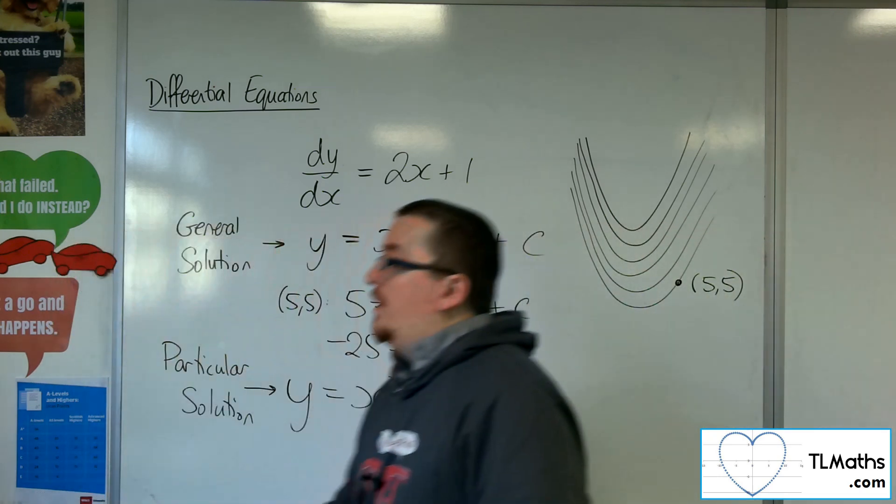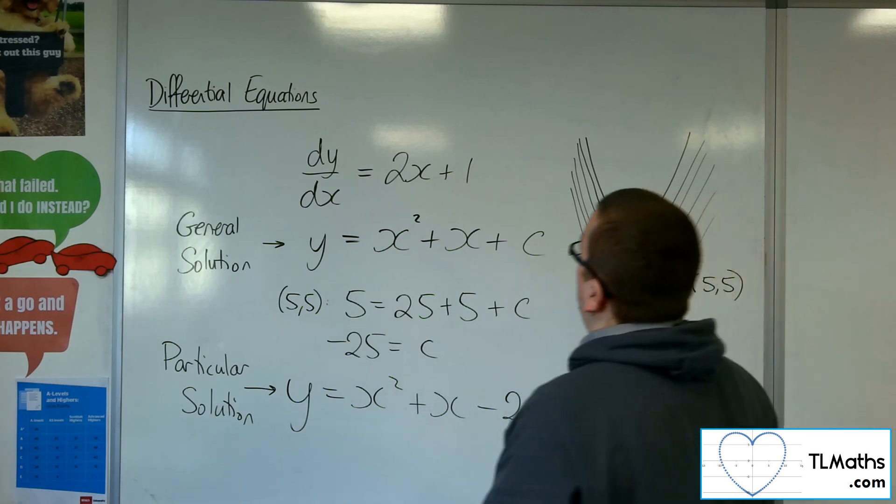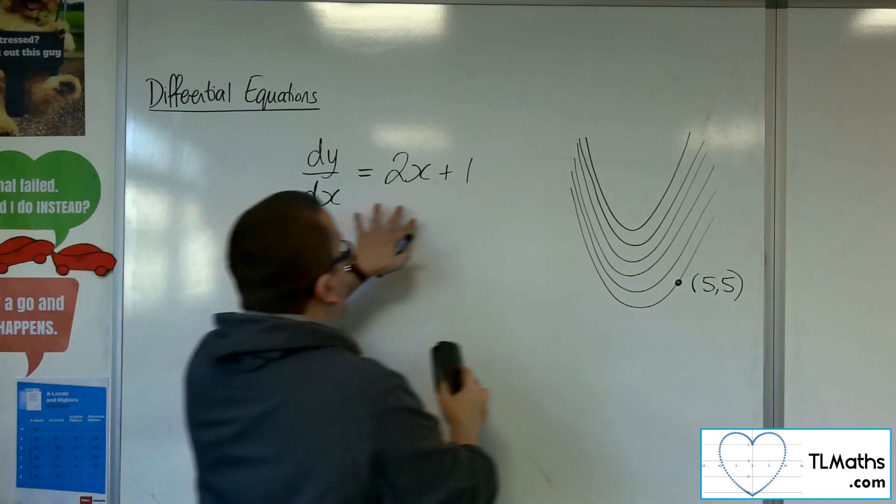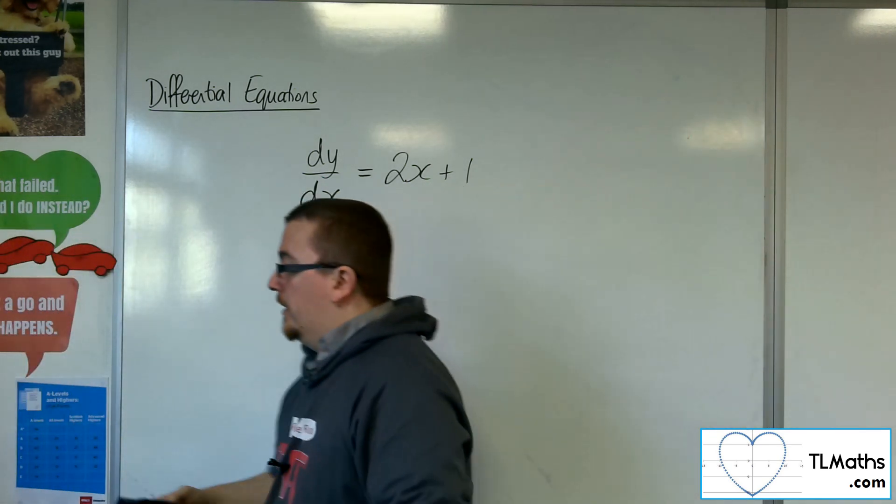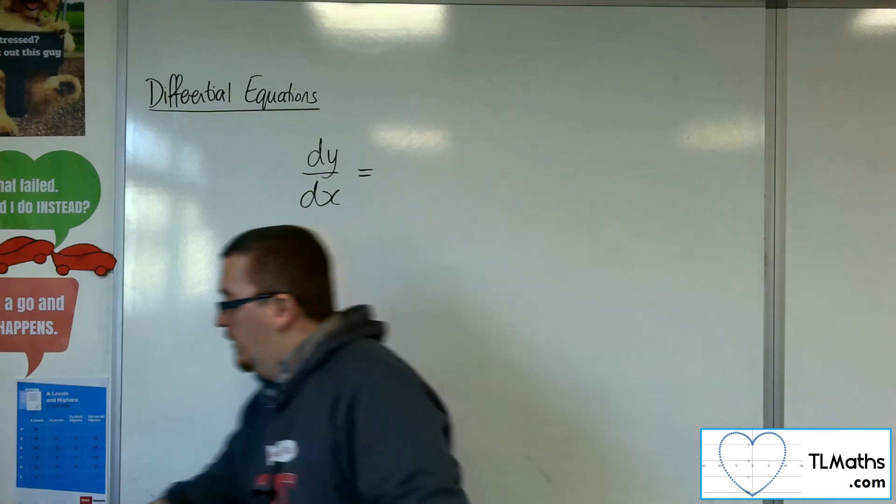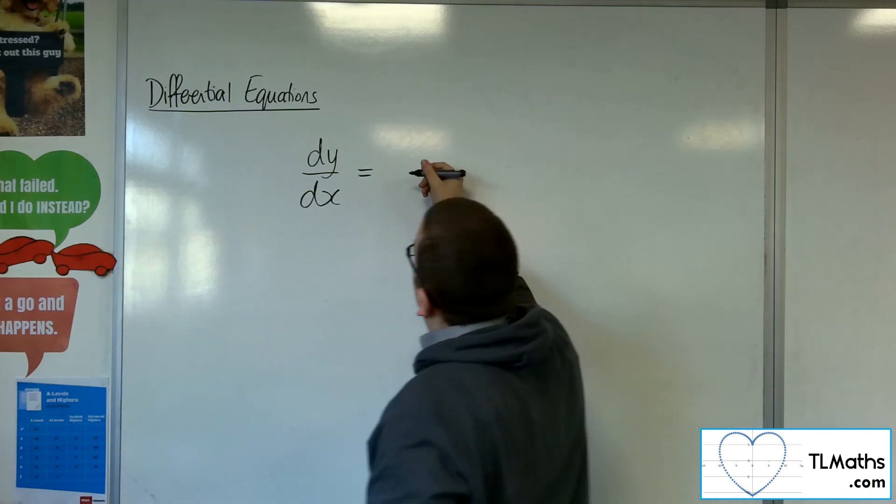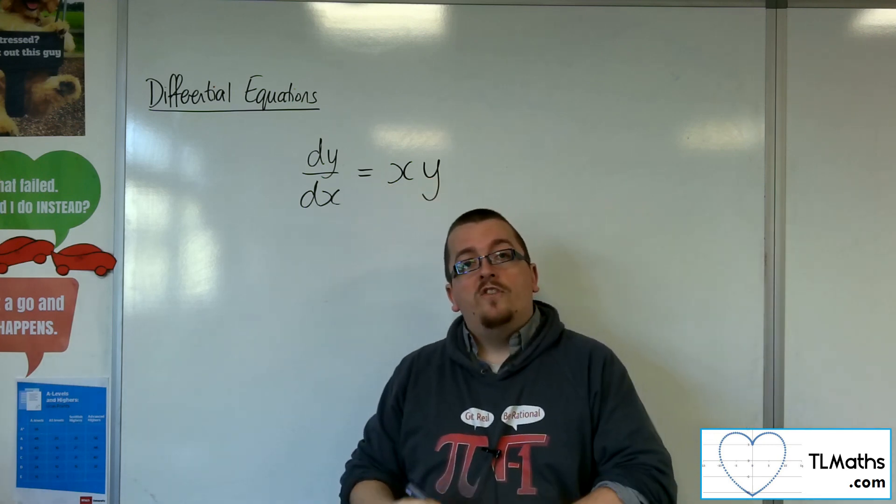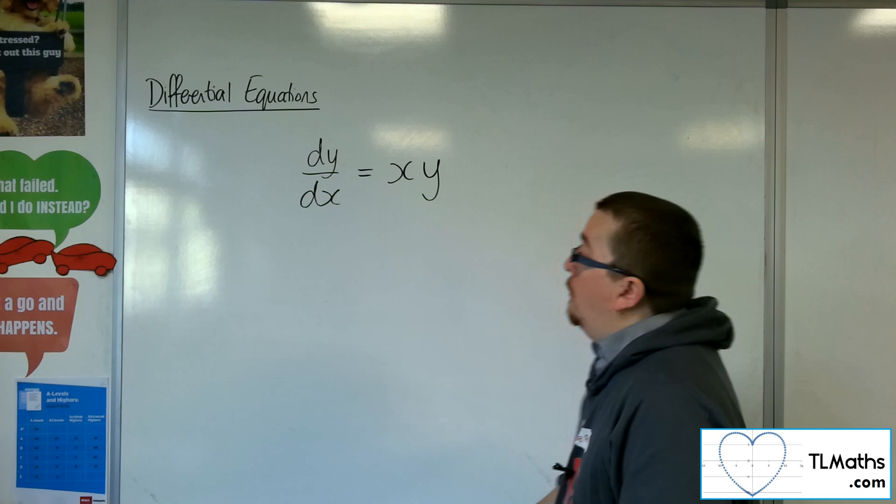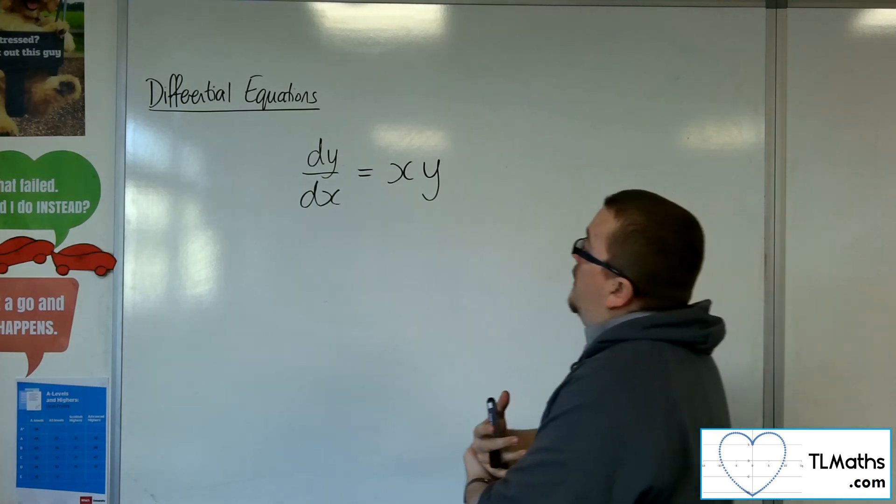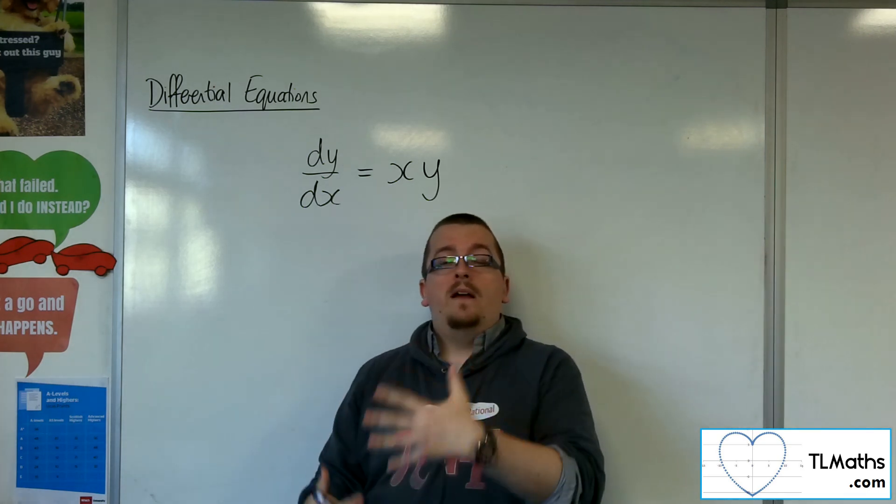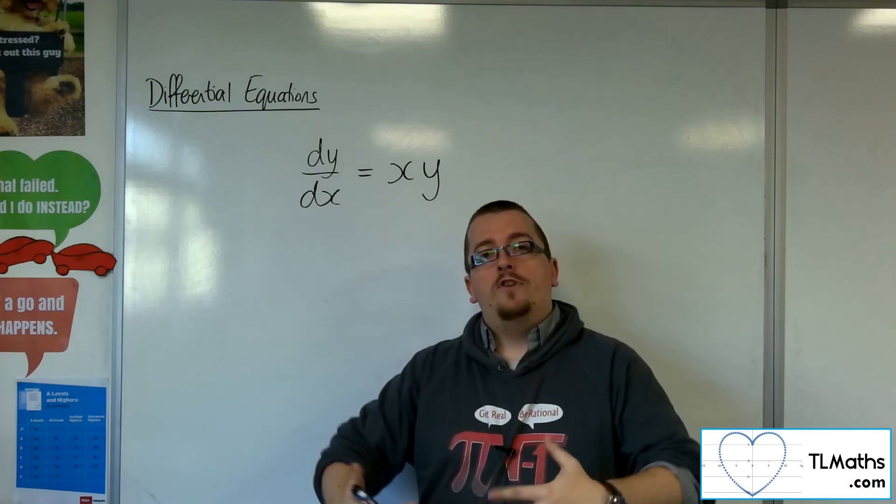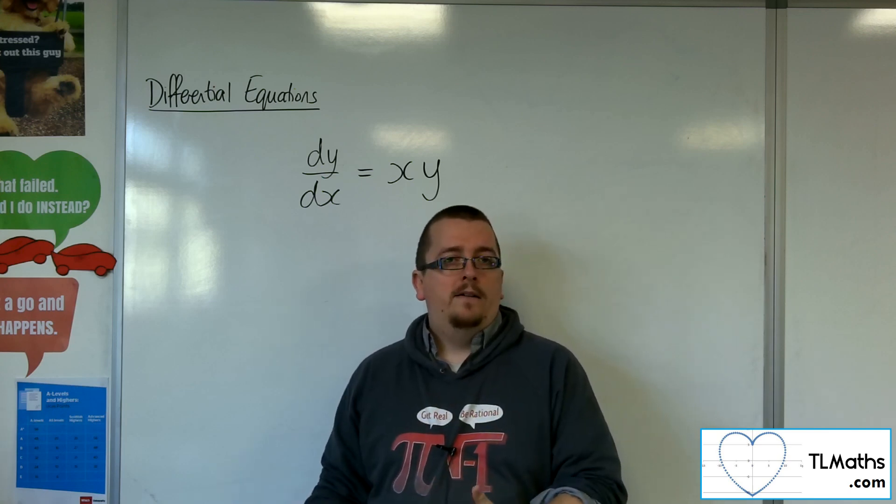Now, the situation that we're going to be dealing with is where instead of having just dy by dx as a function of x like we have there, we might have something like this, where dy by dx is a function of both x and y. Now, there are going to be certain cases where we can use a method called separation of variables in order to solve that. And that's really the only differential equation method that we look at on this course.